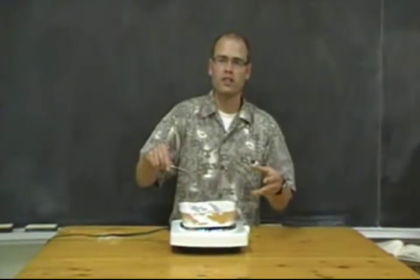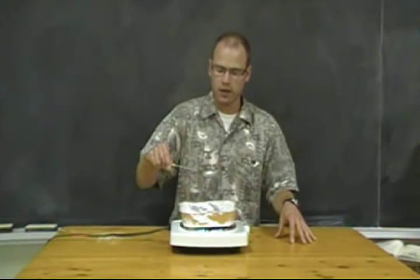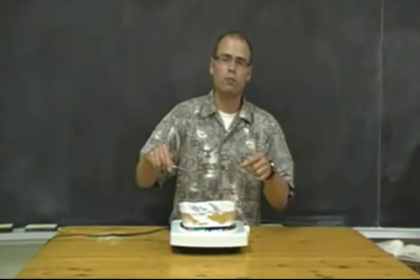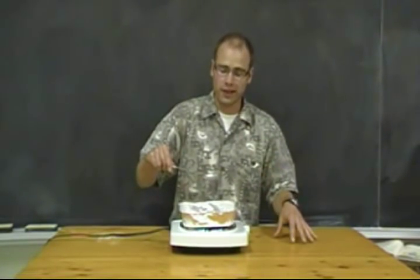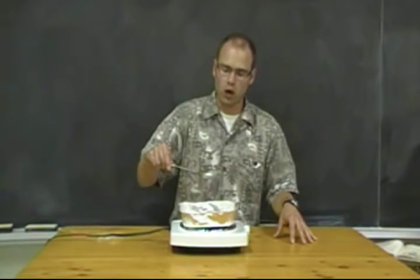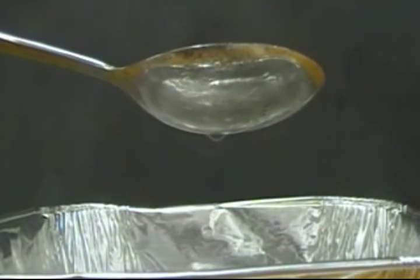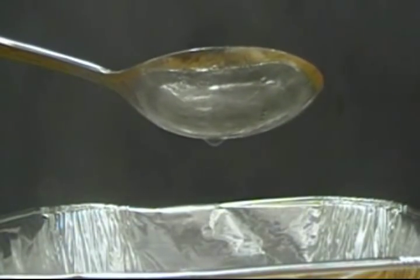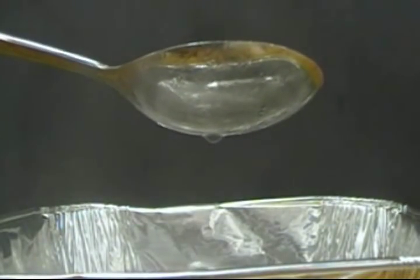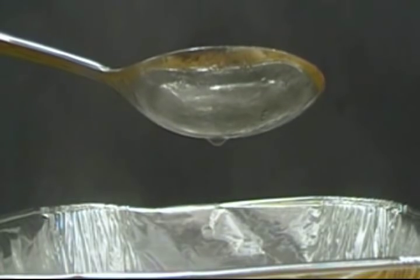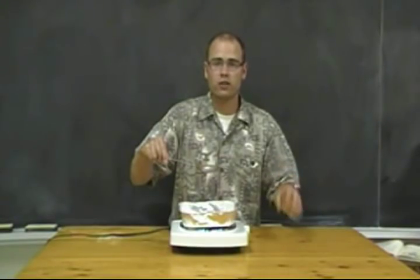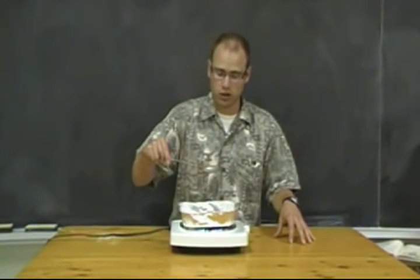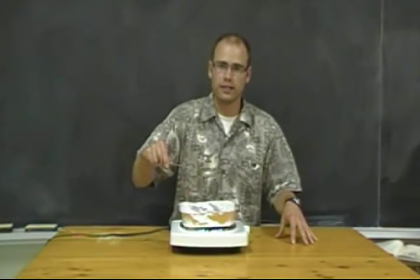Once your water is boiling and producing a lot of steam, get a spoon or a glass filled with a little bit of cold water, hold it on top of the steam, and have your students observe what is forming underneath. Ask them what that is and what change of state is occurring. This is a good example of condensation.